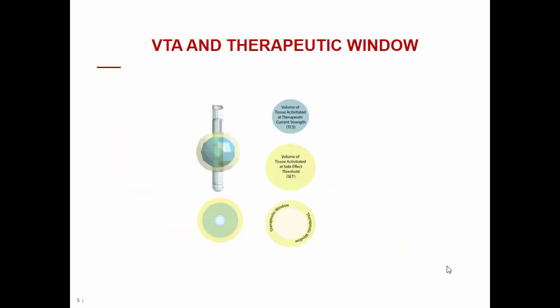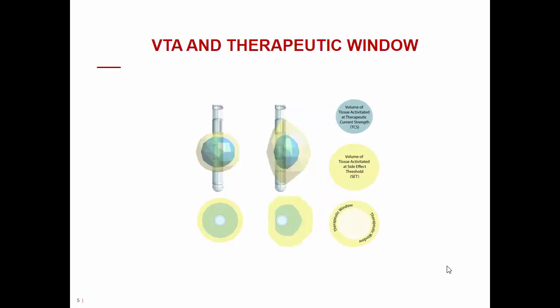With these concepts in mind, we can move into the core of programming: understanding differences in therapeutic windows. The therapeutic window is the difference in stimulation intensity between the therapeutic current strength — the minimal stimulation intensity needed to achieve complete benefit — and the side effect threshold, the stimulation intensity sufficient to cause persistent side effects. Directional programming allows creating completely different VTA shapes, resulting in completely different therapeutic windows compared to omnidirectional programming.